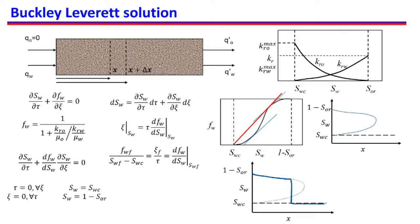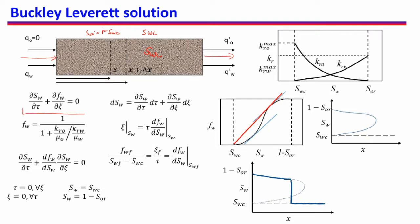Hello everyone. In this video, first I will recapitulate what we have done so far in the Buckley-Leverett solution of multi-phase flow in porous media. We have a one-dimensional porous medium in which initially we have water at connate water saturation, oil is present at 1 minus SWC, and then we are injecting water. We will be producing oil or water, whatever comes out from this porous medium. We did a mass balance equation and using that we found an equation in time and space of SW and FW, where SW is the saturation of water and FW is the fractional flow of water.